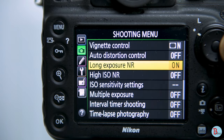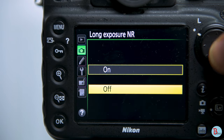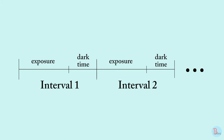In addition, turn off long exposure noise reduction to minimize the camera's processing. Finally, have at least 2 seconds of dark time. Experiment with your camera — if you want to be absolutely safe, keep 3 seconds of dark time. This should be sufficient for communication between the camera and the app to be completed.